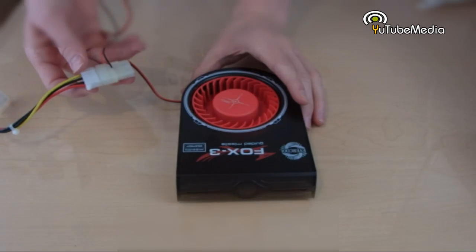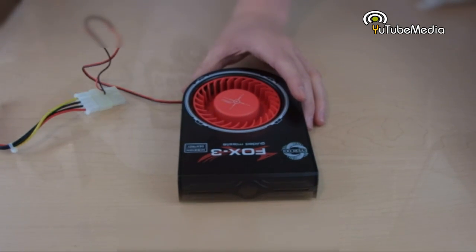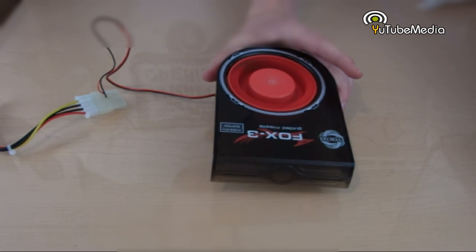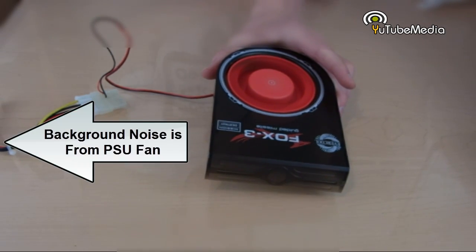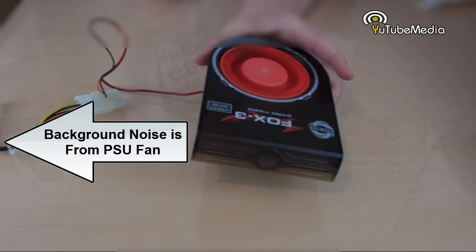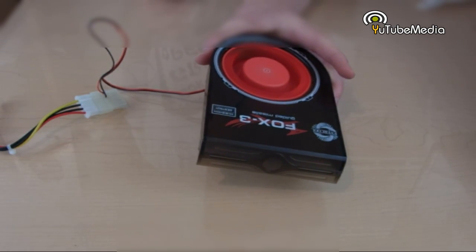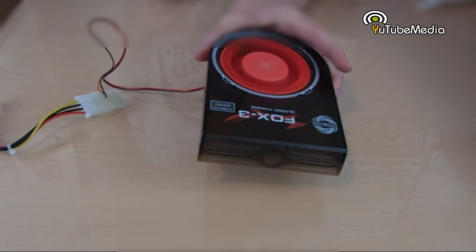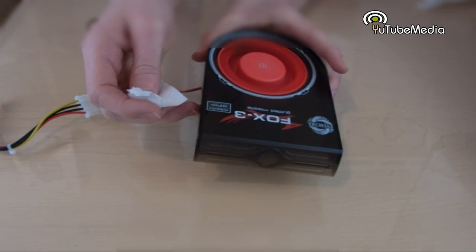All right, so I went ahead and hooked this up to the molex adapter on my PSU. Let's go ahead and turn it on. There you go, it's now running pretty fast. It's 2,000 rotations per minute, runs on 12 volts, noise level is 25 dBA, not too bad. It's also mostly plastic so it's lightweight, only 0.2 pounds.